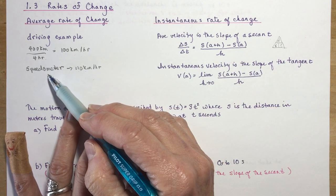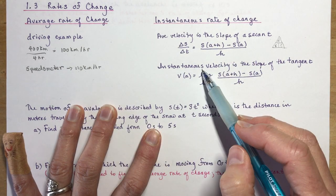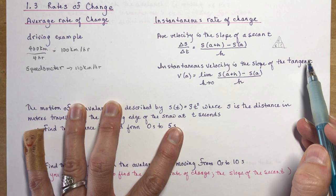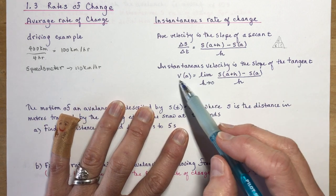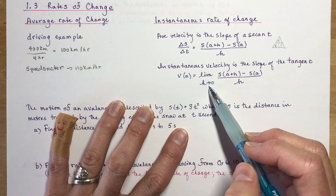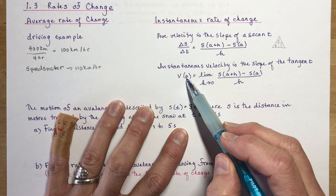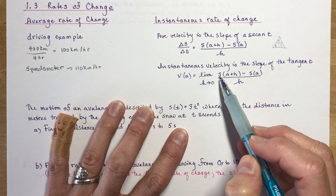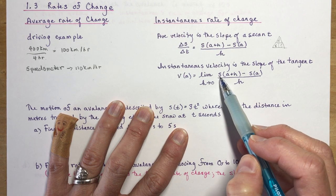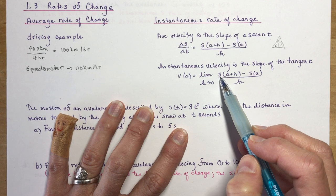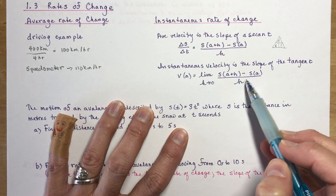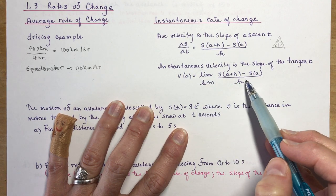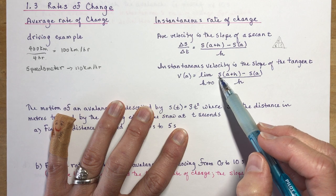Now if I want to know the speed, the instantaneous rate of change, the instantaneous velocity is the slope of the tangent line. So this becomes a limit function. The speed or velocity at a certain point in time is the limit as h approaches 0 of the position function: s(a + h) minus s(a) divided by h. That's the same equation we used in the last lesson, only this time we're using position function to get velocity.